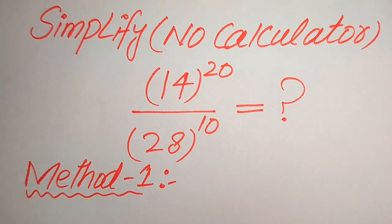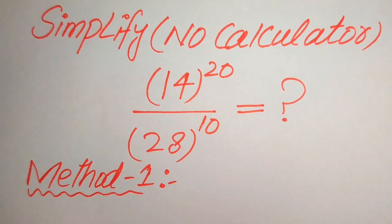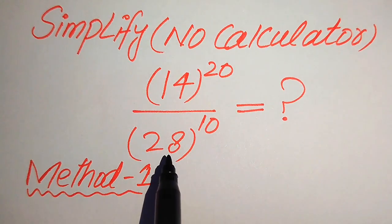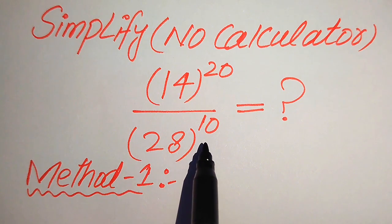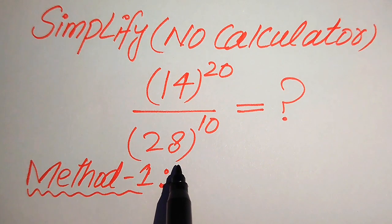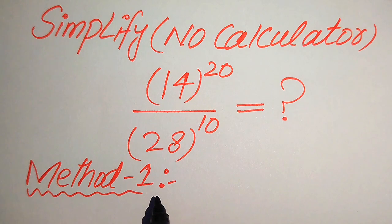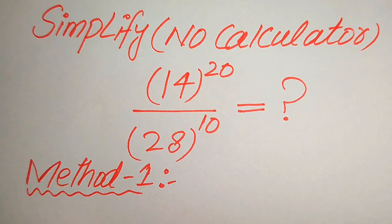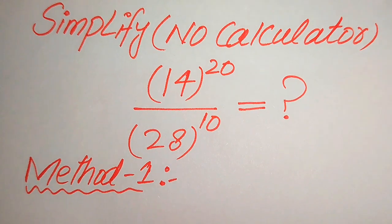Hello everyone! Today I want to show you how to simplify this algebraic expression without using a calculator: 14 to the power of 20, divided by 28 to the power of 10. We will simplify this into the lowest form. I can solve this problem using two methods, and I hope you like both. If you have any other method in mind, please don't hesitate to write it in the comment section.